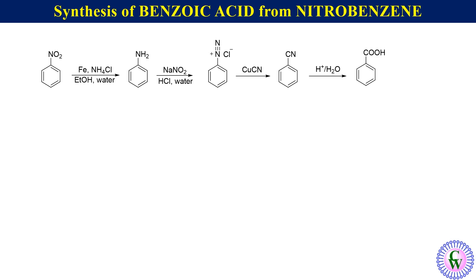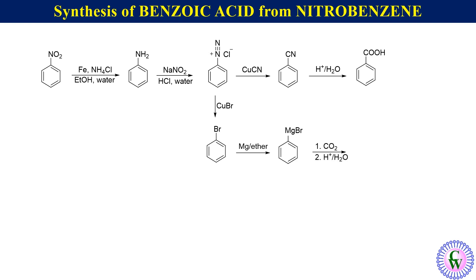In the second approach, the Sandmeyer reaction of benzene diazonium salt with cuprous bromide will give bromobenzene, which upon reaction with magnesium metal in ether will give phenylmagnesium bromide. The phenylmagnesium bromide upon reaction with carbon dioxide followed by acidic workup will give benzoic acid.